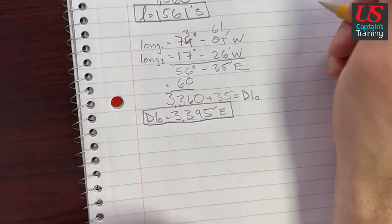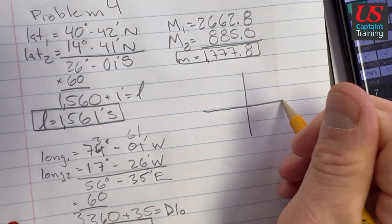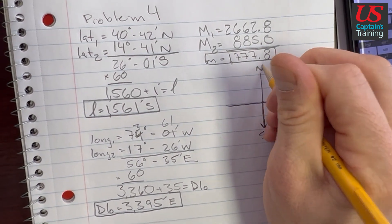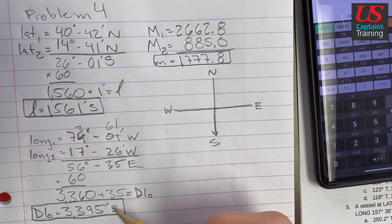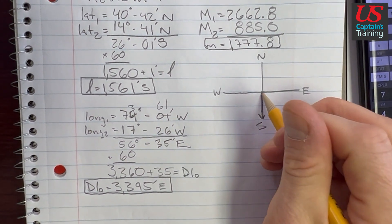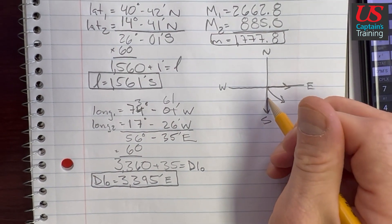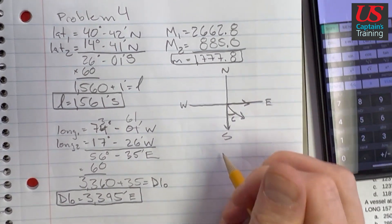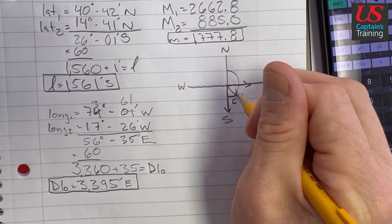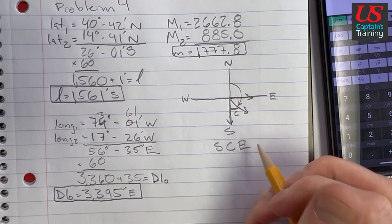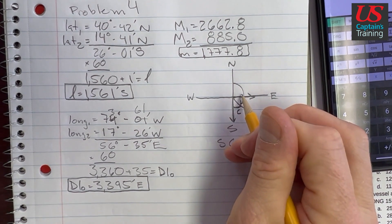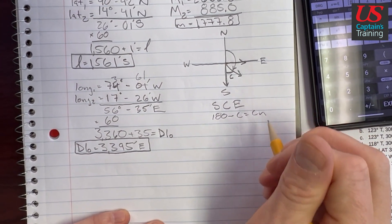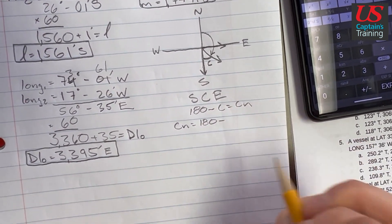Let's figure out what quadrant we're in — quadrant notation. We went from 40 to 14, so we went south. And from longitude 74 to 17 west, we went east. So our course C is from south towards the east. To get CN (true course from north), it's going to be 180 minus C equals CN.